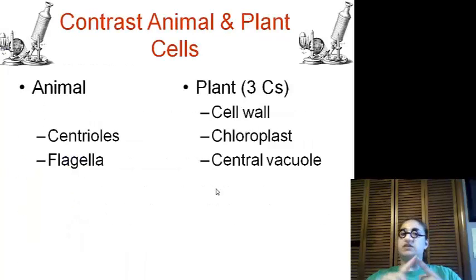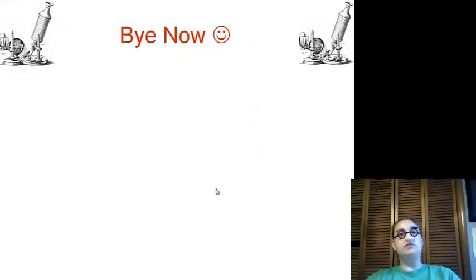When we look at the contrast, animal cells have centrioles and flagella, whereas the plants do not. But the plants have the three C's. It has the cell wall, the chloroplast, and the central vacuole. And that's all I have for you today. So, bye now.